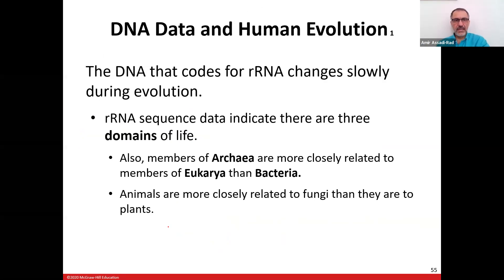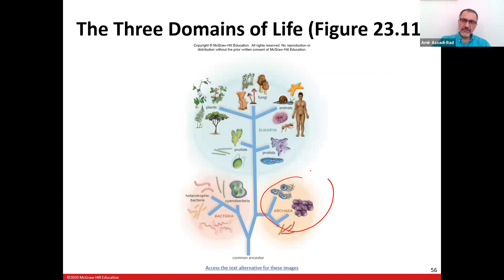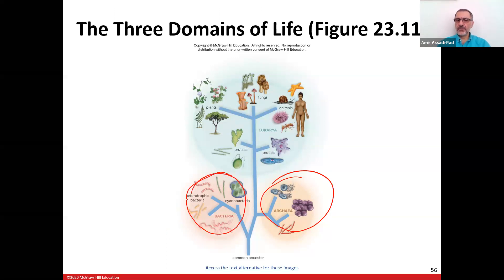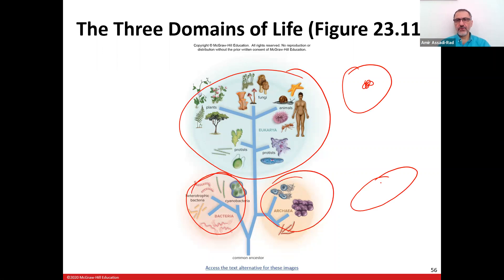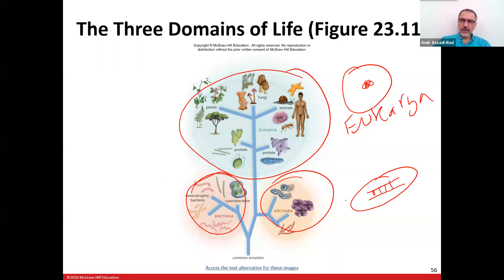Ribosomal RNA data codes change slowly during evolution. RNA sequences indicate there are three domains of life: Archaea, Eukarya, and Bacteria. Archaea are the very early bacteria — the most ancient. Bacteria are more recent prokaryotes. All of these — Archaea and Bacteria — do not have a nucleus, though they do have DNA. Eukarya cells do have a nucleus. Archaea and Bacteria together are called prokaryotes.